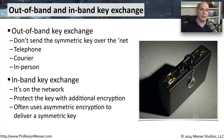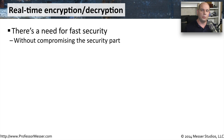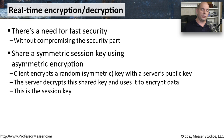We very commonly use in-band key exchange when we're sending a symmetric key, but we will use asymmetric encryption to encrypt the symmetric key and then send it across the network. The best way to do this is to create a symmetric key that you then encrypt and send across the network, combining both symmetric and asymmetric encryption to make this happen.